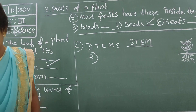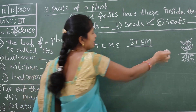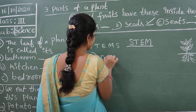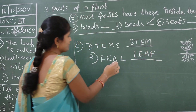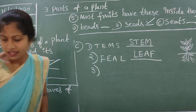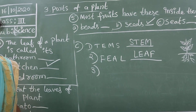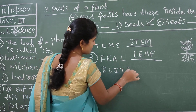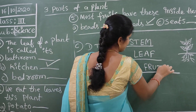Next - it makes food for the plant. We know already - leaf. Here spelling is F-E-A-L, unscramble to get L-E-A-F. Next - most flowers grow into these. Flowers turn into fruits. Here letters are R-U-I-T-S-F, unscramble to get F-R-U-I-T-S. Fruits.